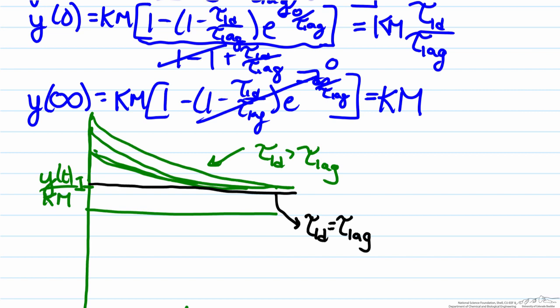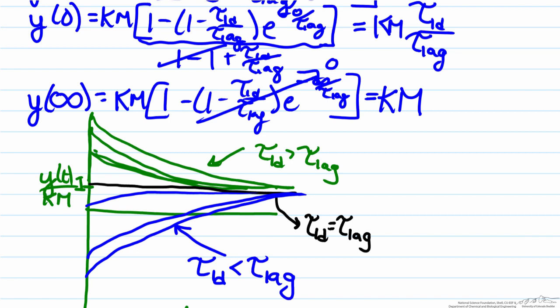Finally, for cases where tau lead is less than tau lag, which can also include tau lead being a negative number, you see the opposite of what we saw where it was greater than tau lag. The system will start below one, and work itself towards the steady state value of one. And these two here show when values are negative, but it also can very well be the fact that the lag values can also be greater than the lead values, both being positive numbers.